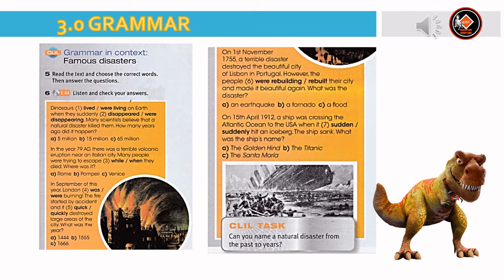In the year 79 AD, there was a terrible volcanic eruption near an Italian city. Many people were trying to escape when they died. Where was it? The answer is B — the volcano was near Pompeii.